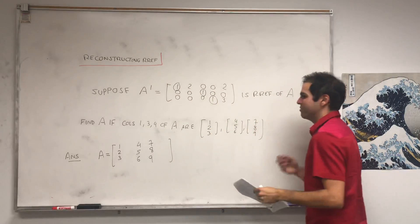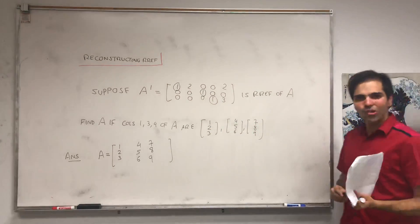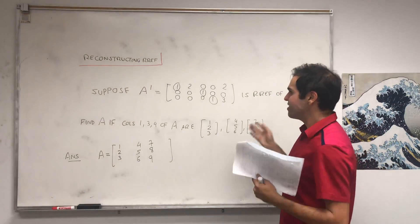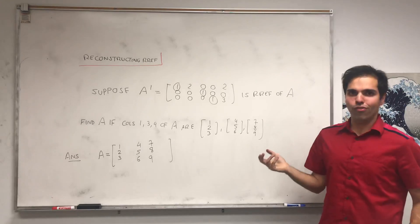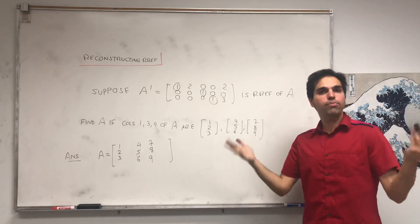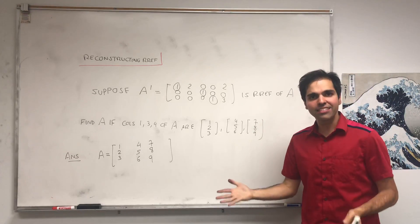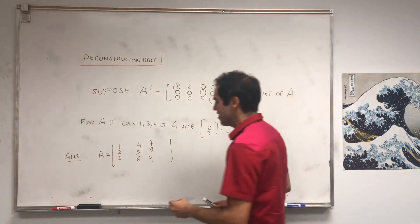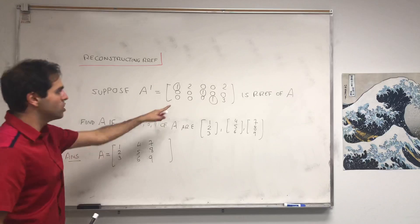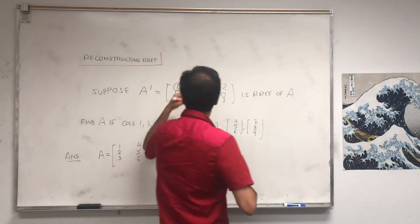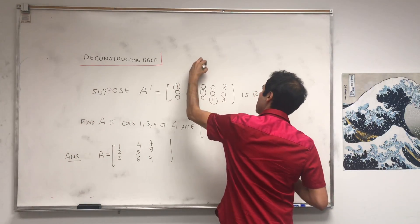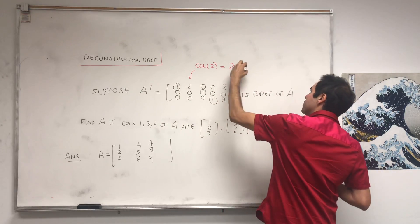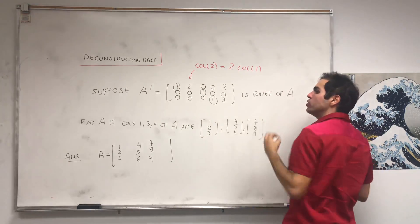Now here's the cool thing, and I talked about this in another video. The nice thing about reduced row echelon form is that it not only preserves linear independence but it also preserves linear dependence relations. In particular, notice what we have here: the second column equals two times the first column of the reduced row echelon form.